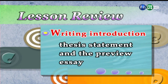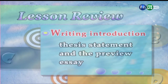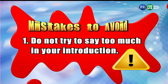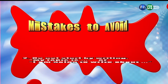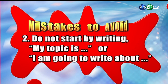And the introductory paragraph of your writing model uses this strategy. Finally, there are some mistakes that you should avoid. First of all, do not try to say too much in your introduction — just give a brief preview of your major ideas and do not give all the details of all your arguments. 好，你只要給個簡短的關於各項重點的大概提示就可以了。Another mistake to avoid is do not start by writing 'My topic is' or 'I am about to write' or 'I'm going to write about.'